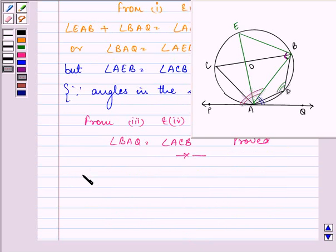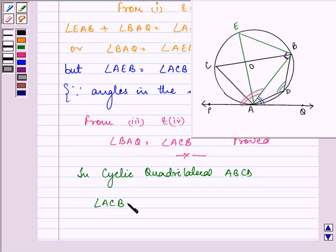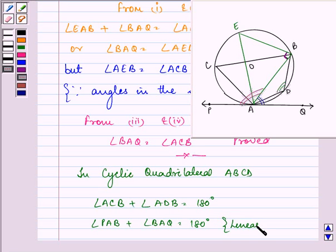Now, for the next part, in cyclic quadrilateral ABCD, we know that sum of angle ACB plus angle ADB is equal to 180 degrees. Similarly, angle PAB plus angle BAQ is equal to 180 degrees. This is because of linear pair. They are forming linear pair. And this is because opposite angles of a cyclic quadrilateral are supplementary.